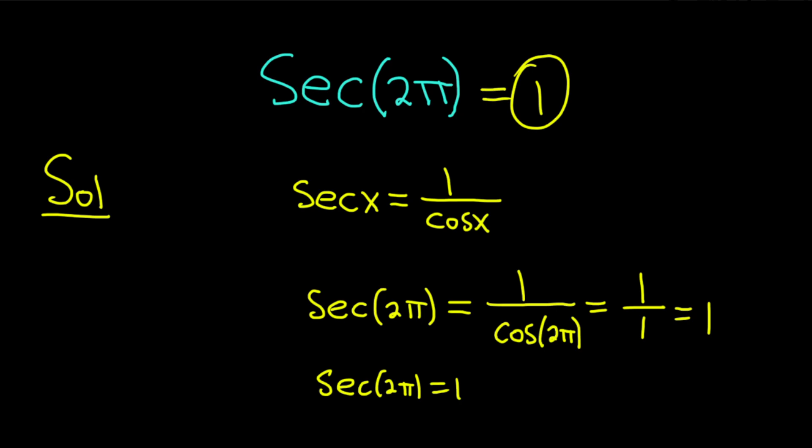So the secant of 2π is equal to 1. The trick is to write secant as 1 over cosine, and then just plug in 2π, and then the cosine of 2π is 1, so you get 1 over 1, which is equal to 1.